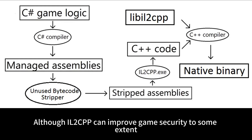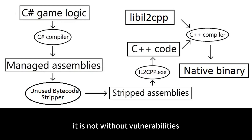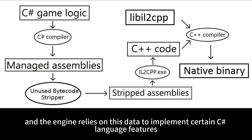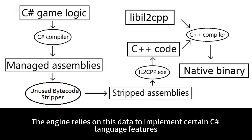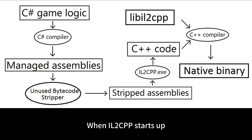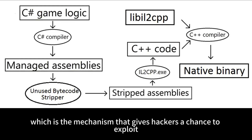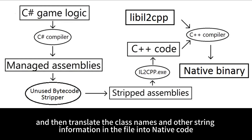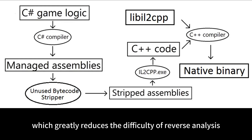Although IL-2 CPP can improve game security to some extent, it is not without vulnerabilities. In IL-2 CPP mode, Unity records class names, property names, strings, and other information from C# code in the global-metadata.dat file, and the engine relies on this data to implement certain C# language features. When IL-2 CPP starts up, it reads the required class names, property names, etc. from this file, which is the mechanism that gives hackers a chance to exploit. A hacker can use IL-2 CPP dumper to parse the global-metadata.dat file, and then translate the class names and other string information into native code, which greatly reduces the difficulty of reverse analysis.